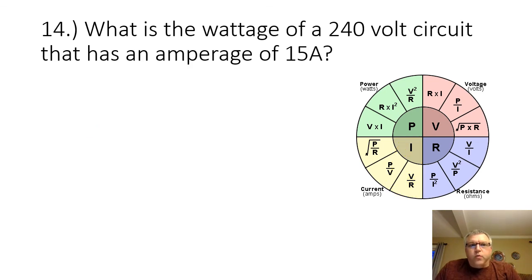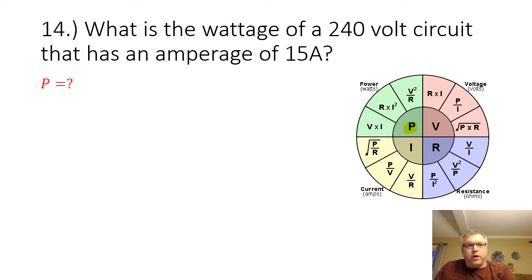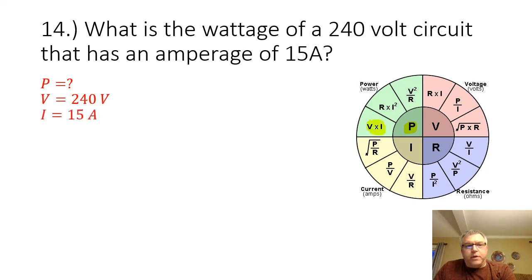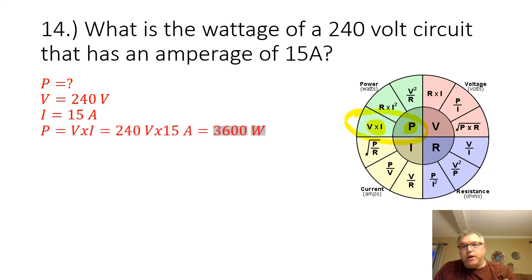Problem 14: what is the wattage of a 240-volt circuit that has an amperage of 15 amps? We are looking for the power. We are given the voltage at 240 volts and the current at 15 amps. Our formula is P equals V times I. 240 volts times 15 amps equals 3,600 watts.